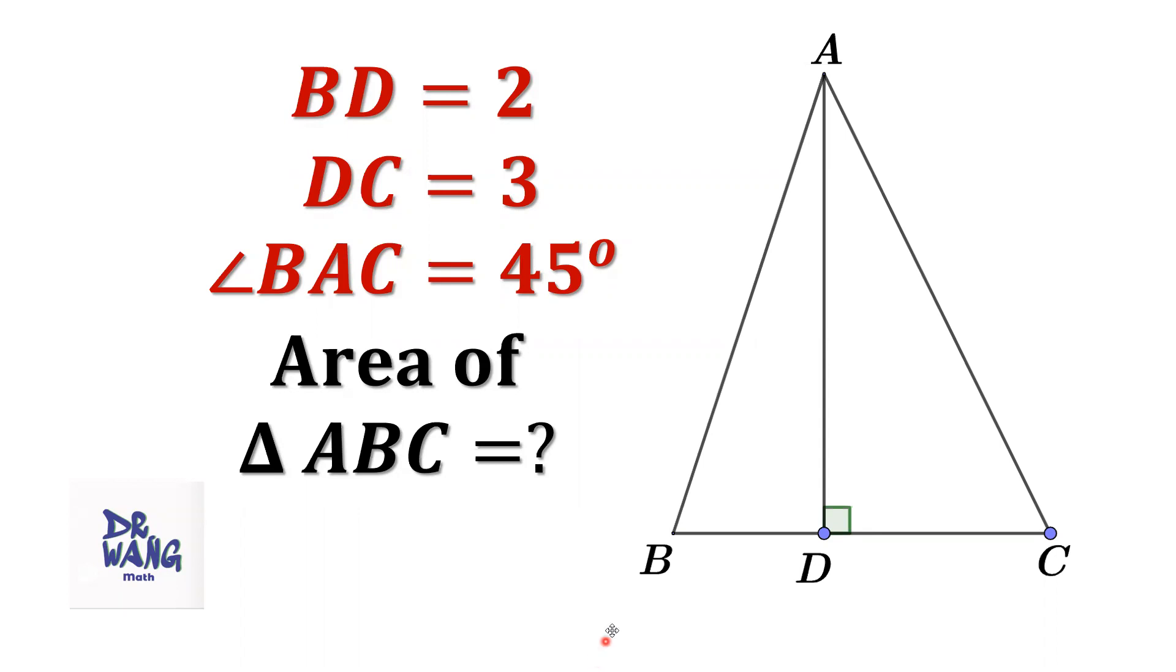For a given triangle ABC, AD is perpendicular to BC. BD equals 2, DC equals 3. Angle BAC equals 45 degrees.